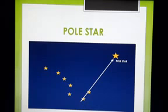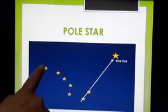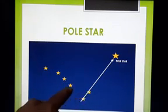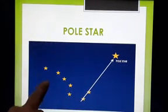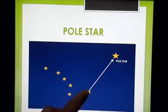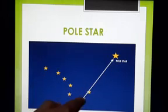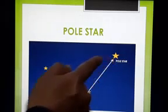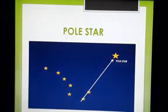Here is the diagram of the Polestar. You can see it looks like an opposite question mark. If you follow the last two stars of that shape straight ahead, at some distance you will see a very bright star — that is called the Polestar, and it will always be located in the northern direction.